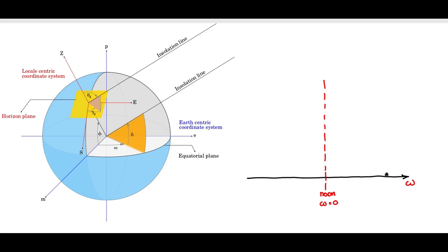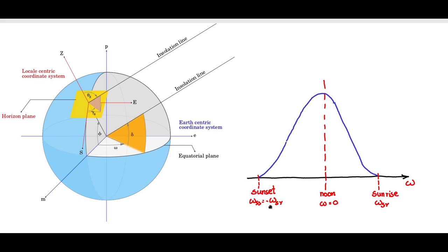Sunrise will be located on the positive side of noon and sunset on the negative side. Sunrise is represented as omega_sr and sunset as omega_ss. Note that the distance of sunset from noon and the distance of sunrise from noon are the same — the only difference is that omega_ss is negative. Therefore you can write omega_ss as minus omega_sr.